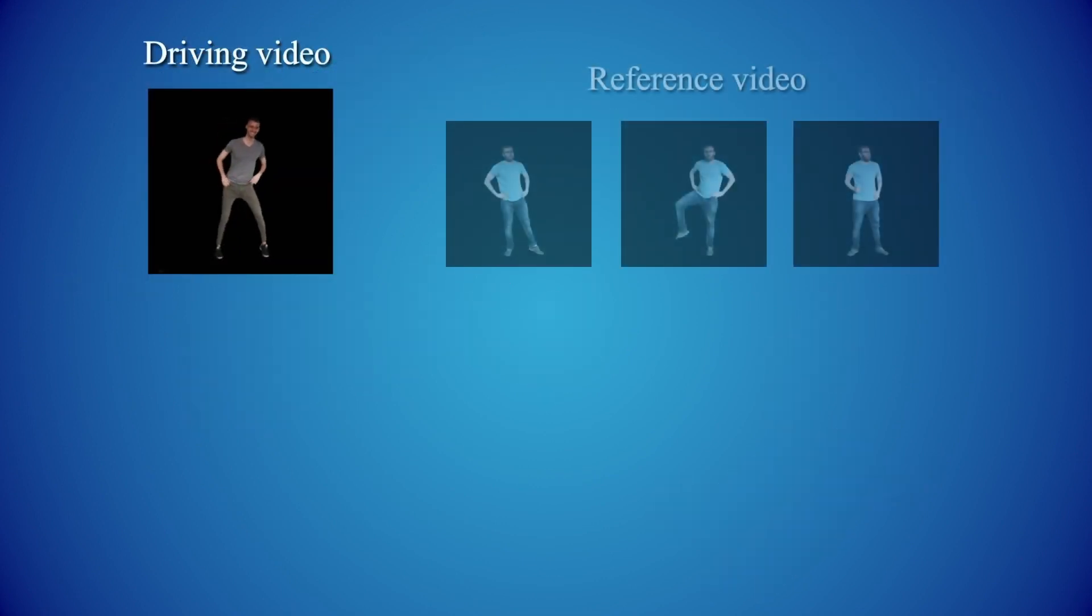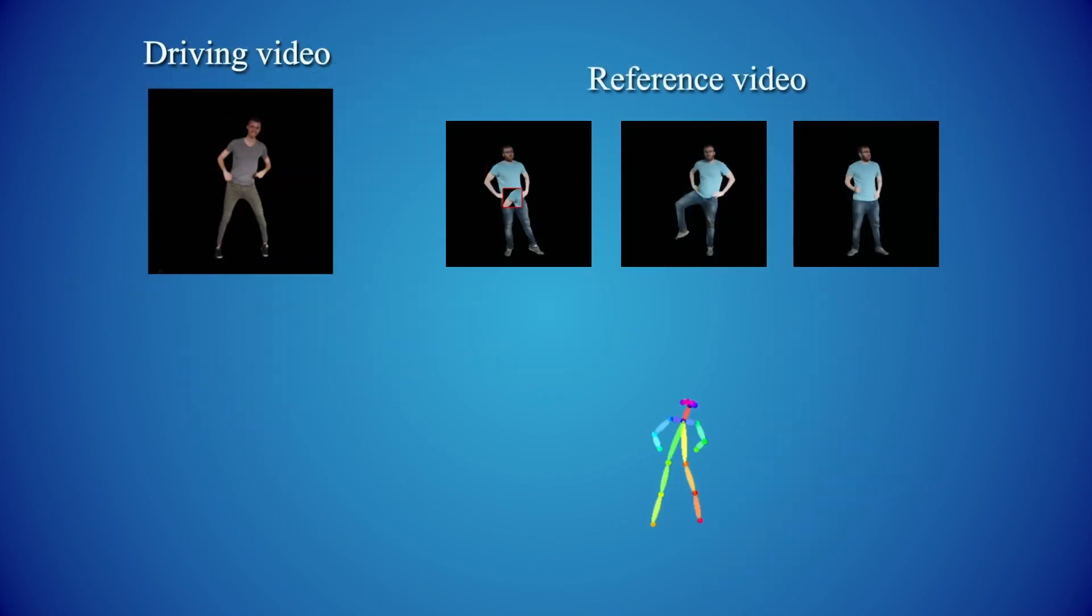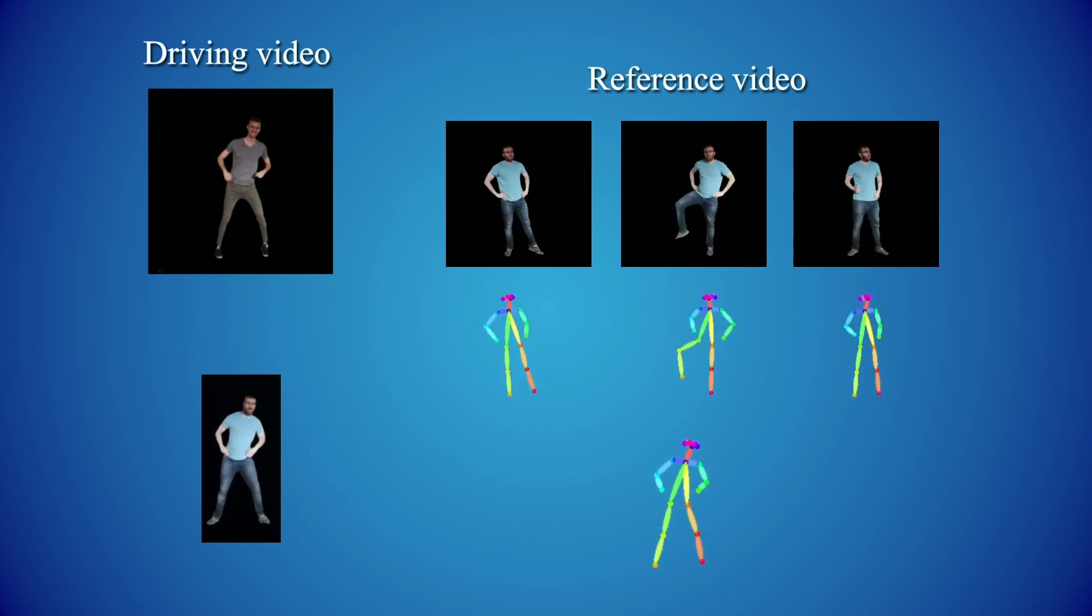Since generated frames are reconstructed from local patches that were observed by the network in the reference video, we compare poses based on distances between pairs of corresponding limbs. This enables to measure how well the desired motions may be reproduced. For more details, please refer to the paper.